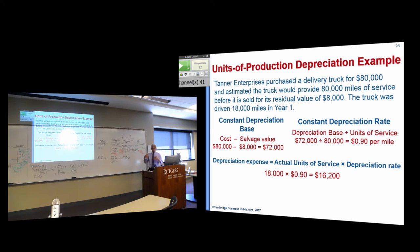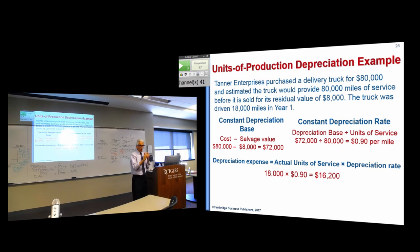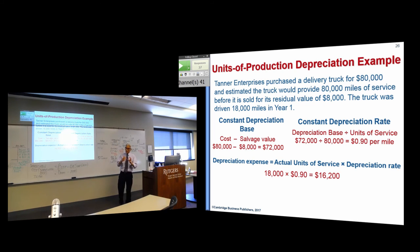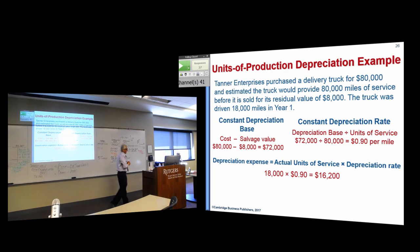The units of output method is mostly used for depletion of natural resources. For example, if a deposit has 600,000 barrels of oil, as you extract it you take a cost per barrel and add that to inventory rather than expensing it directly. This method uses the same depreciation base as straight line — cost minus scrap value.